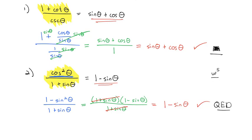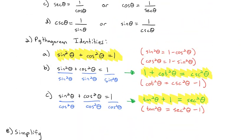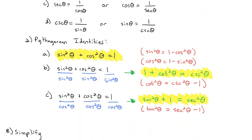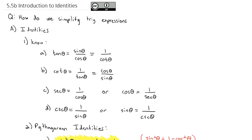So we've covered a couple of trig identity types today. The Pythagorean identities are the new ones, but we also have the reciprocal identities we already had experience with. Take a look at practicing some of those on the homework assignment. Let me know if you have any questions, and good luck.